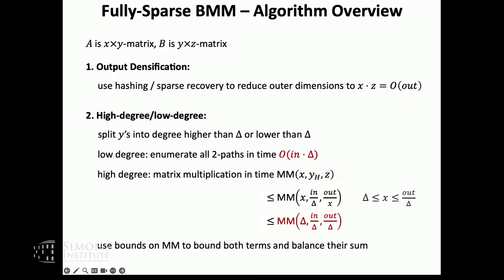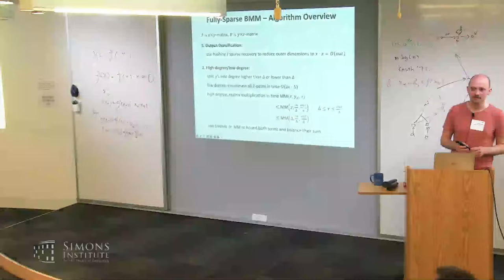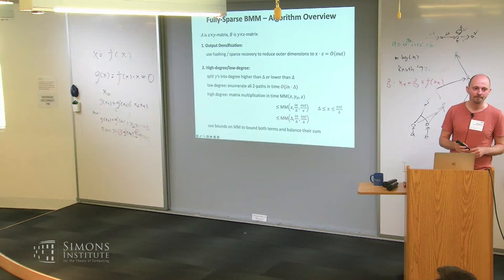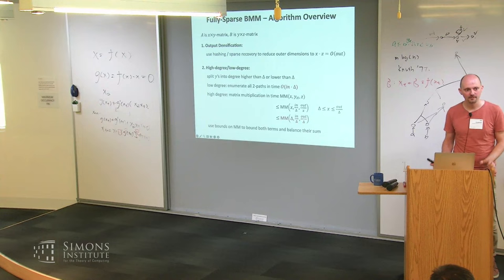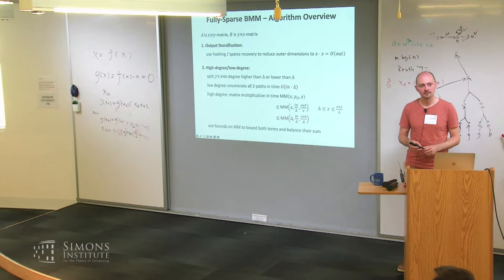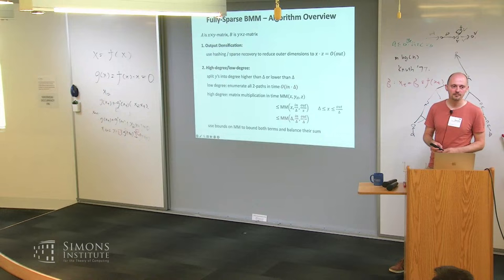Does this generalize to a chain of matrices — three or four? Only in the sense that the input size of the second product would be the output size of the first product. We don't have better bounds than this right now, but it would be interesting to look at. Actually, we have a paper from three years ago where we implemented this type of thing — the high-degree/low-degree and dense matrix multiplication — and it really works, but you don't use Strassen. You use fast vectorization and library implementations of dense matrix multiplication.